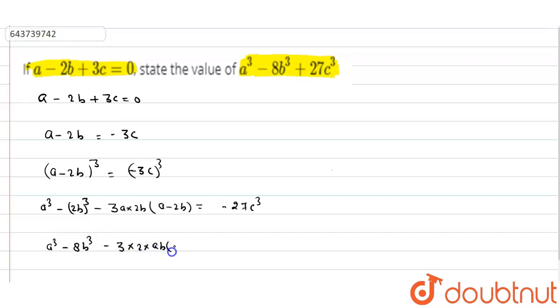So putting the value of 3c here, -3c equals -27c³. Then a³ - 8b³ + 18abc is equal to -27c³. So a³ - 8b³ + 18abc equals -27c³.